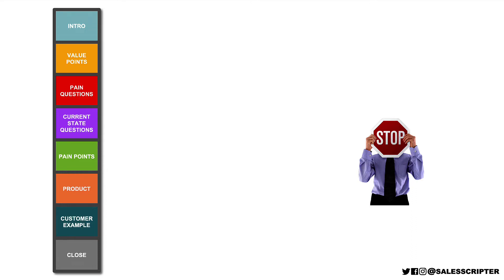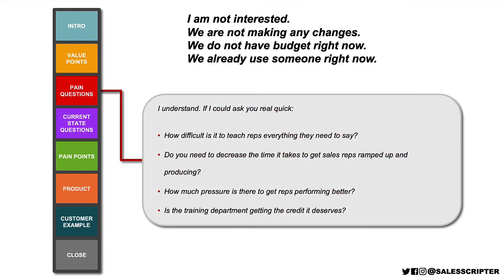To demonstrate how this works, if you organize those objection responses into a cold call script — when you're cold calling you're definitely going to run into objections on almost every call. Our objection handling methodology works by deflecting your response to a different building block. For example, certain objections on a cold call can deflect back to our pain questions building block. So if the prospect says 'we're not making any changes right now,' you respond: 'Oh, I understand — if I could ask you real quick, how difficult is it to teach reps everything they need to know to say when they're selling and talking to prospects?' That's deflecting back to the pain questions building block by asking a pain question.